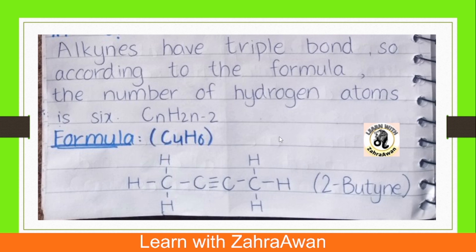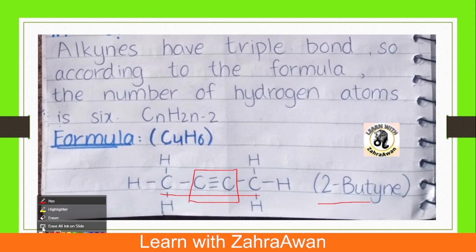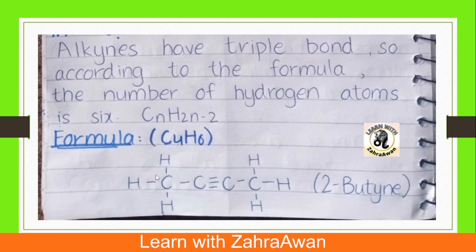The compound satisfying these conditions is 2-butyne, a member of the alkyne family. If you draw its structure, there are 4 carbon atoms with a carbon-carbon triple bond. When we count the hydrogen atoms, there are 3 hydrogen atoms on one end and 3 hydrogen atoms on the other end, giving a total of 6 hydrogen atoms.